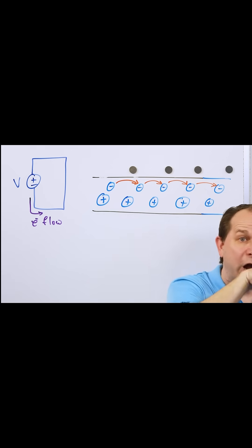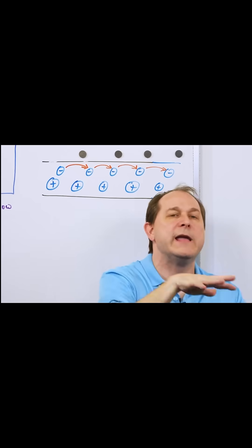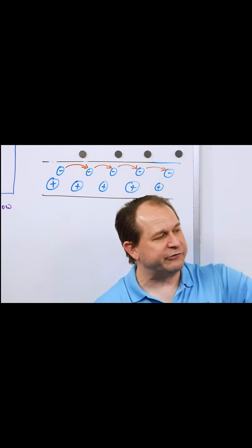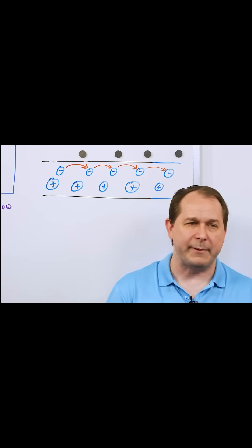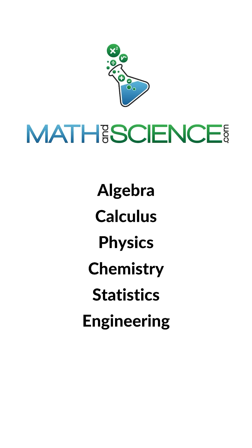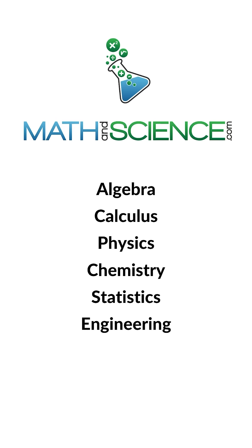And when you apply a voltage, they all kind of hop to the next atom over, and then again, and then again, and they race around the circuit. Eventually another electron will come around the other side and enter into the other end of the battery or into the power supply. Learn anything at mathandscience.com.